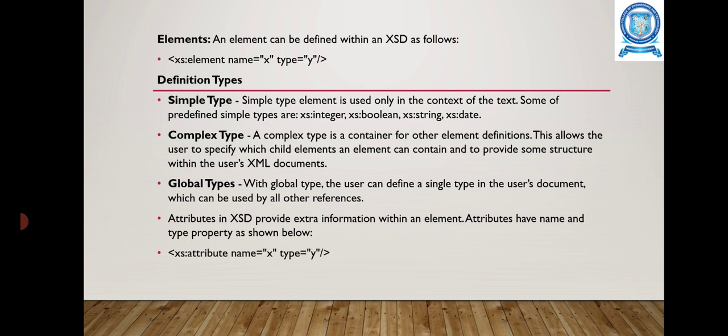Complex type is a container for other element definitions, allowing the user to specify child elements and provide structure within the XML document. With global type, the user can define a single type in the document. Attributes in XML schemas provide extra information with an element; they have both a name and a type property, specified as xs:attribute with name equal to x and type equal to y.